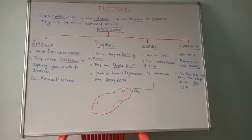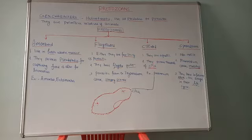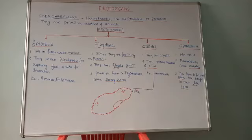The third group is ciliated protozoans. Here, instead of flagella, this group possesses cilia — thousands of cilia are present for locomotion. The best example is Paramecium, a unicellular organism with thousands of cilia for locomotion. They are found in water and are aquatic in nature.